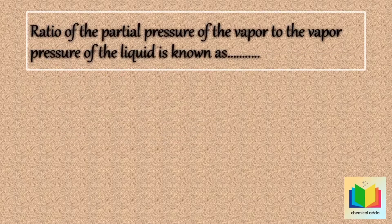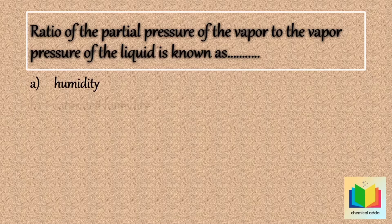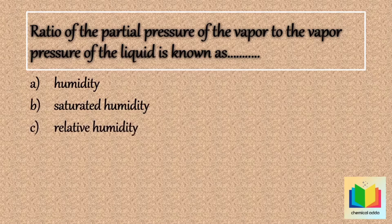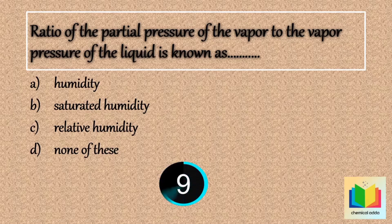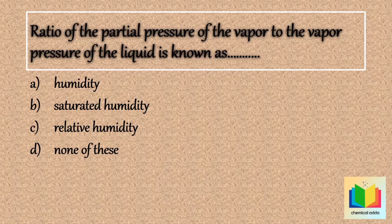Next question: the ratio of the partial pressure of the vapor to the vapor pressure of the liquid is known as — option A: humidity, option B: saturated humidity, option C: relative humidity, option D: none of these. The answer is option C: relative humidity.